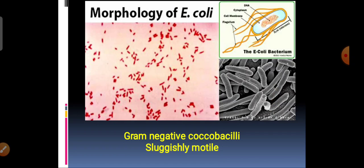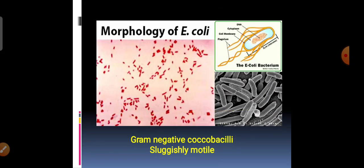If it is non-motile, it can be Shigella or Klebsiella. So by performing gram staining and motility, you can make a rough judgment about what kind of organism it can be. Depending upon your interpretation, you select the selective media for cultural characteristics.